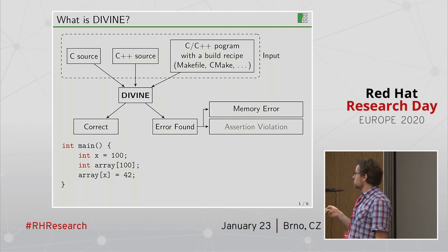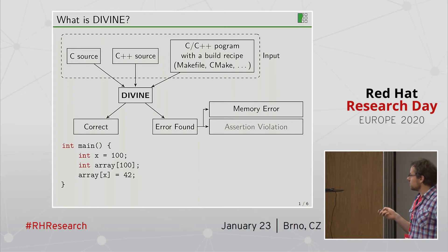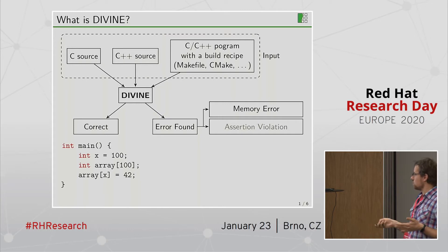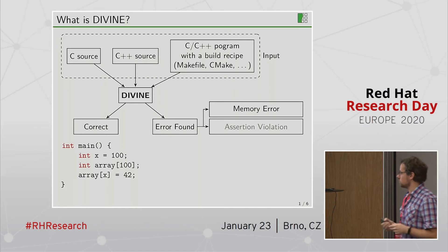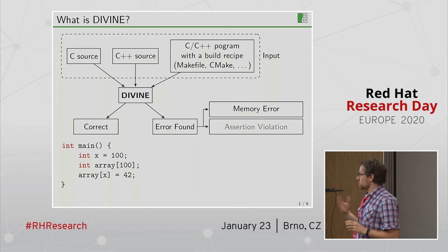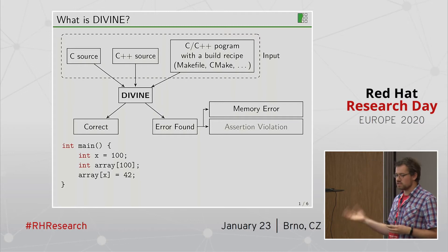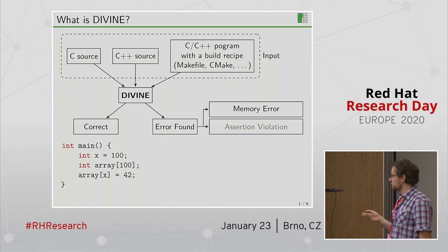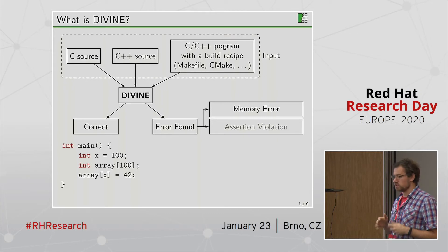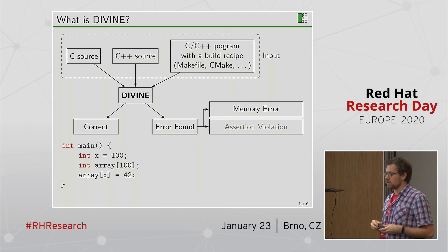Then you can find memory errors, which means for example accessing arrays out of bounds. You have an array, you have an index, and you are accessing outside the array bounds. Depending on how the array is allocated, this might be something quite easy to discover by other tools, for example by Valgrind. But if it is stack-allocated or if there are any symbolic values — variables which have an unspecified value — then this might be work for Divine.